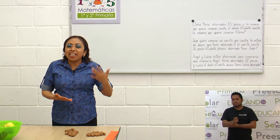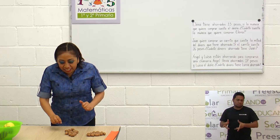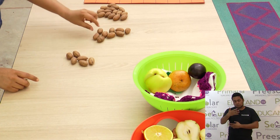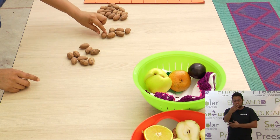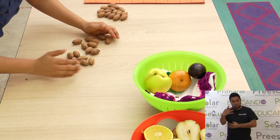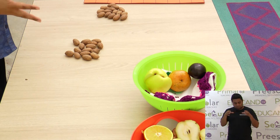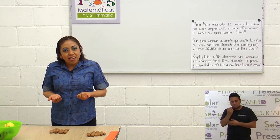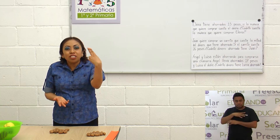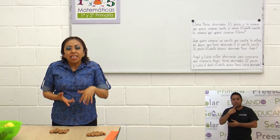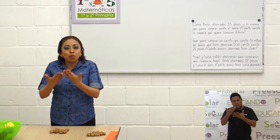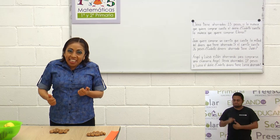¿Y qué crees? Ya eso hemos visto en clases anteriores. Aquí tenemos quince nueces. Estas quince nueces queremos otra cantidad igual para que sea el doble. Cuando tenemos dos veces un número, se transforma en el doble. Si aquí tenemos quince, ¿cuántas más tenemos que agregar? Pues dos veces ese quince.